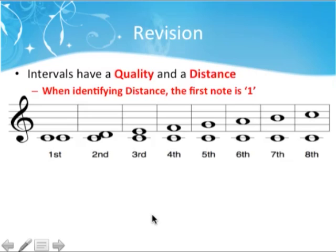When we look at intervals we have to identify two things: the quality and the distance. Remember when identifying the distance, the first note is 1. So for instance here we've got a second and we go from C to D — from C to D is 1, 2.